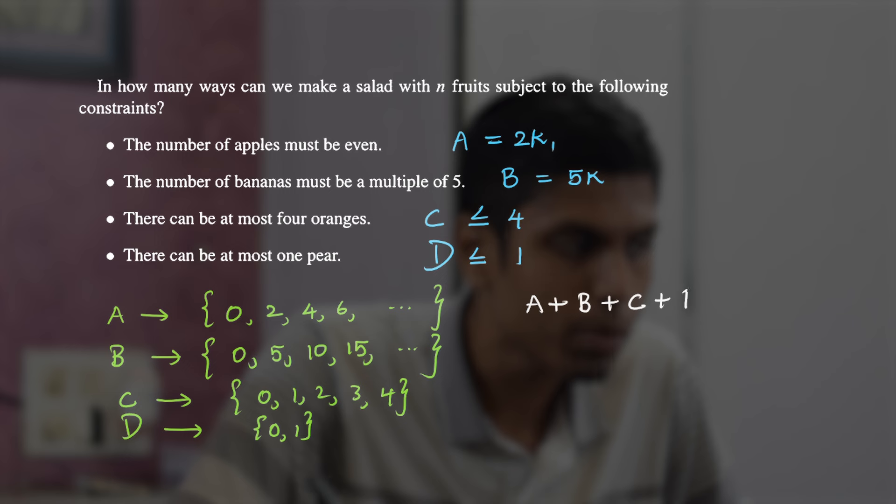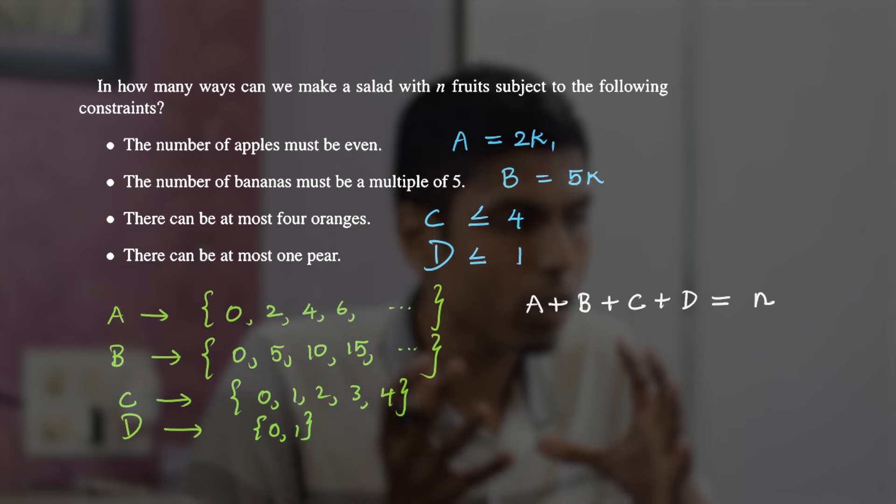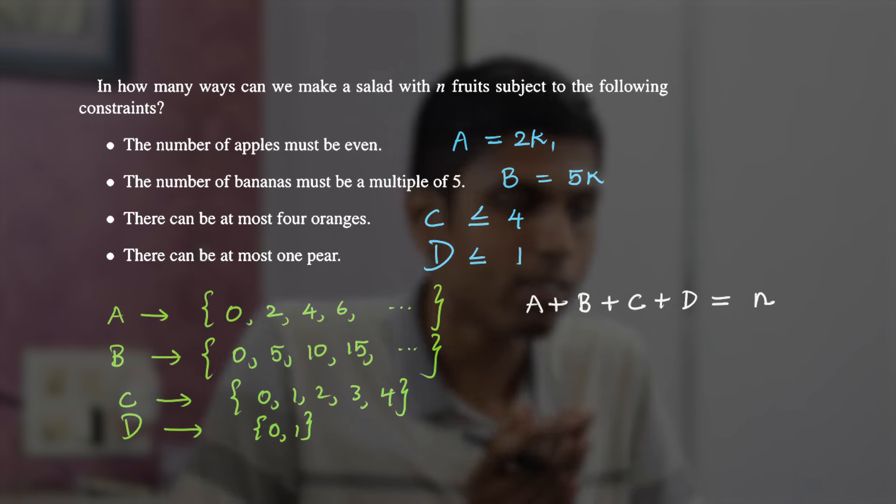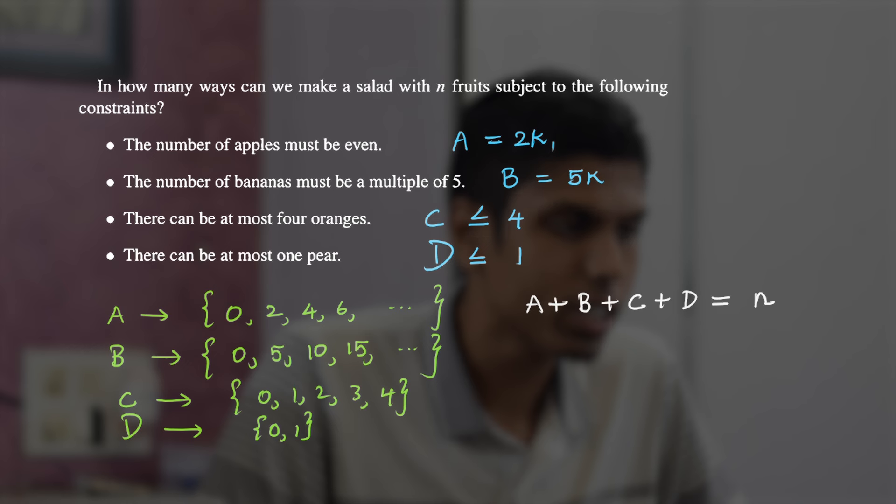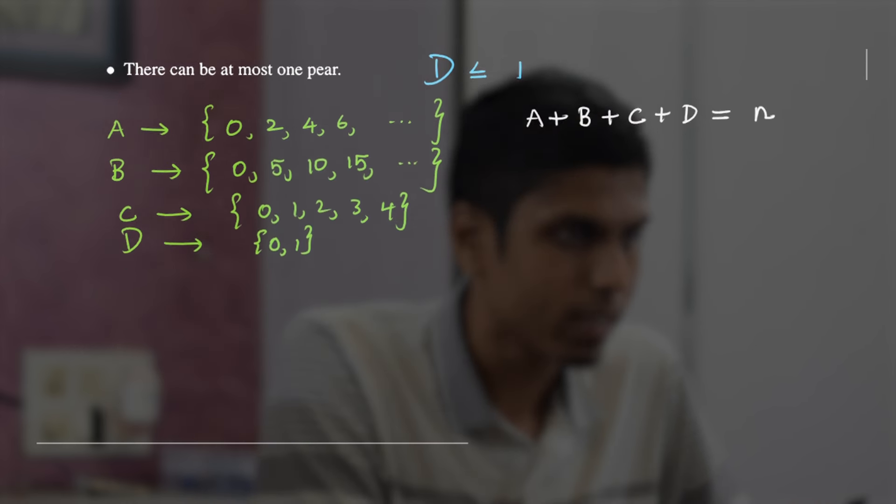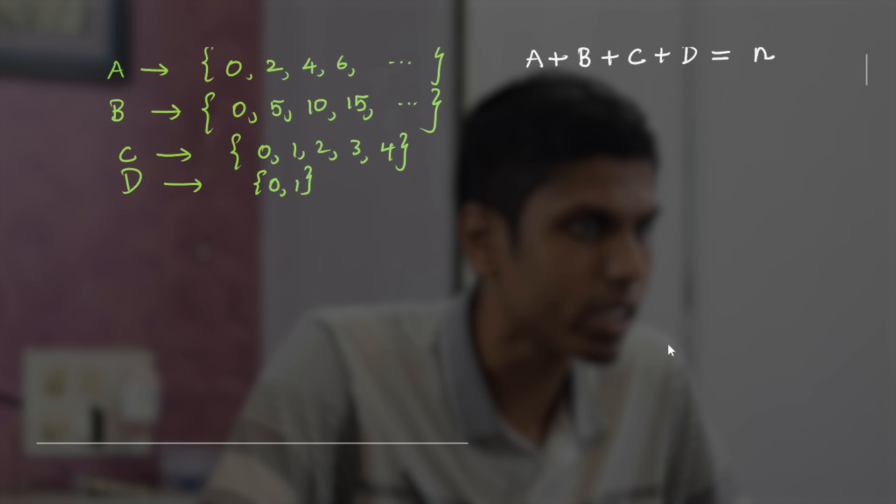Remember that we need n fruits to be used to make that salad, so that can be formulated as A + B + C + D equals n. So you have to find the number of numbers from the set A, B, C, D which will add up to n, and the number of ways you can do that. This question is not supposed to be counted directly, but let's see what can be done using generating functions.